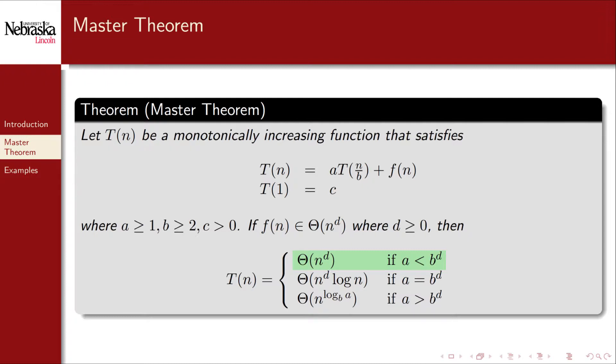Intuitively, if a is strictly less than b to the d, then we are making fewer recursive calls than we are doing non-recursive work, as characterized by the function f of n. If a equals b to the d, then we're roughly doing the same amount of recursive work as non-recursive work.